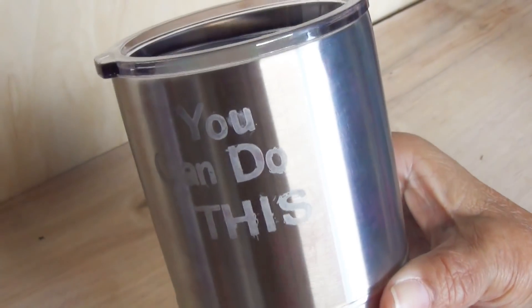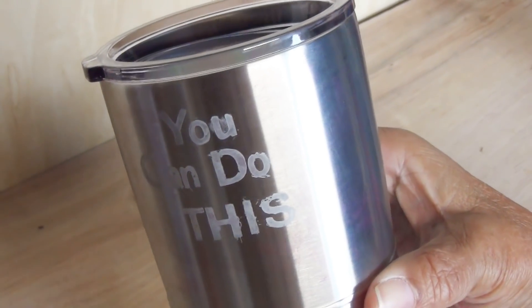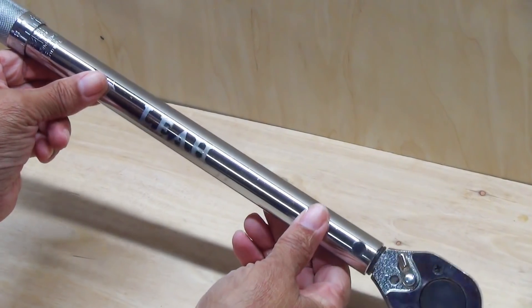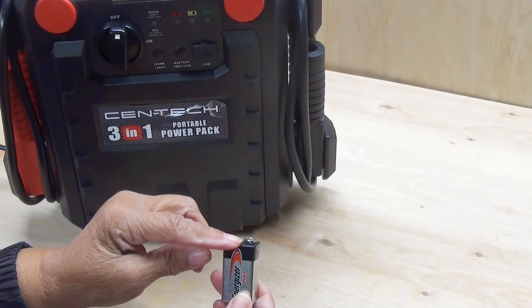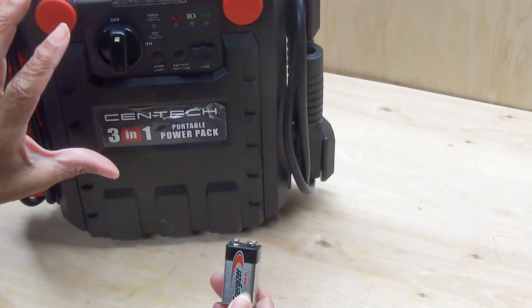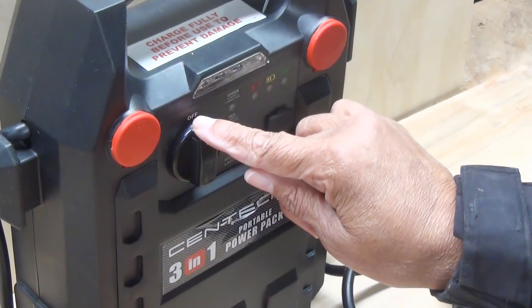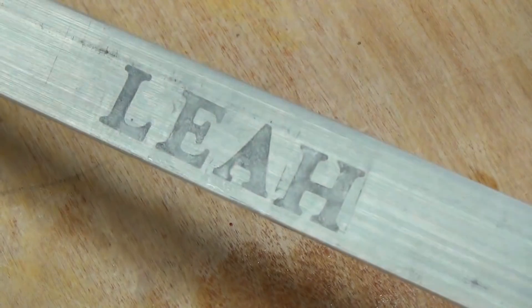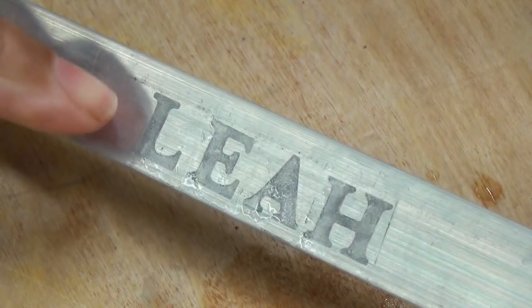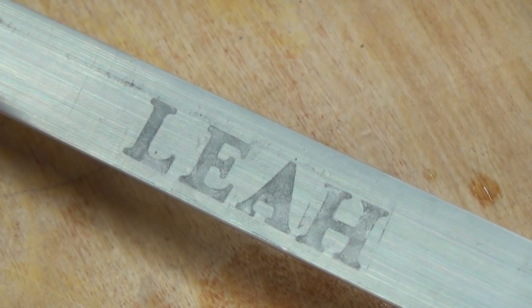Now what I will tell you is this. If you've got a lot of etching to do, you may want to use a different power source than a 9-volt battery. You can use a battery charger. That will work very well. But for just a small job like this or just one cup, a 9-volt battery is perfect.